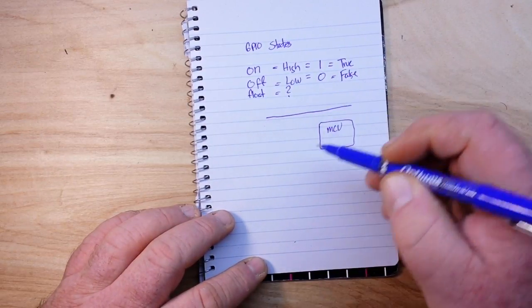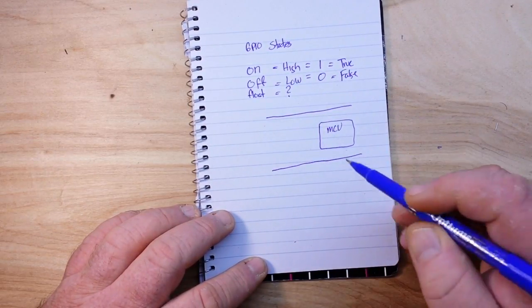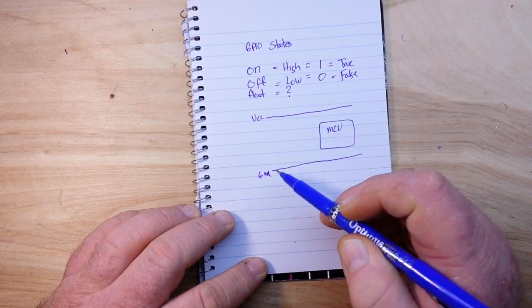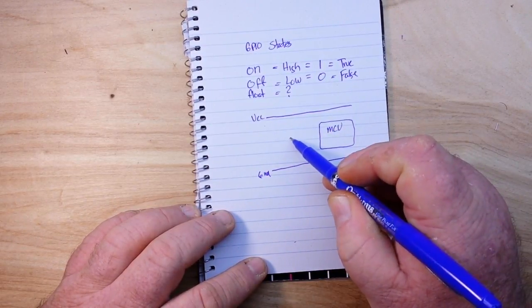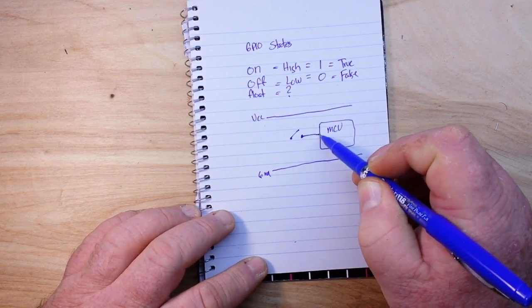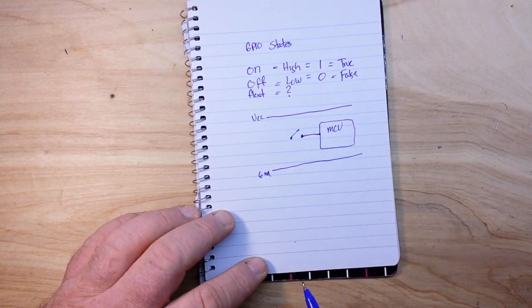and we have our ground rail and our VCC, and we have a switch going to an input.